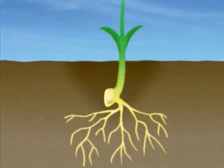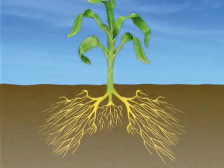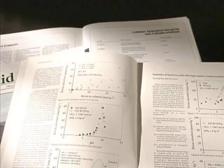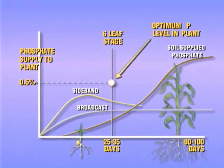Phosphate doesn't move around in the soil, so it won't move to the root. Therefore, the only phosphate the plant can take up is the phosphate the root happens to intercept. University research studies in the United States and Canada show that the highest requirements for phosphate in the tissue per gram of plant is before the plant reaches the six-leaf stage, or about 25 to 35 days after planting. The placement of side-banded fertilizer, two inches beside and two inches below the seed, leaves the plant potentially short of phosphate at the critical time, prior to the six-leaf stage.